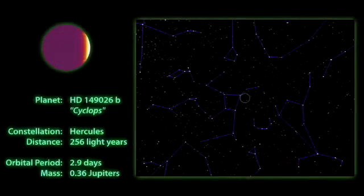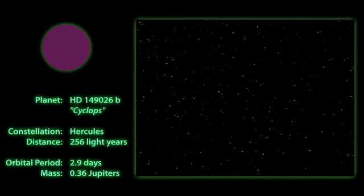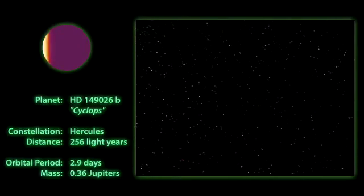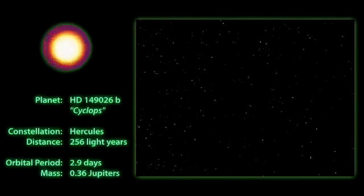Our first X-Planet, Cyclops, can be found in the constellation Hercules, orbiting a sun-like star that's about 250 light-years away.